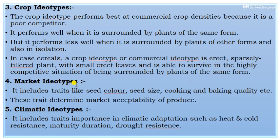The fourth type is market ideotype. It includes traits like seed color, seed size, and cooking and baking qualities. From a marketing point of view, good seed color, seed size, and cooking and baking qualities will fetch a good market price. These traits determine the market suitability of the produce.